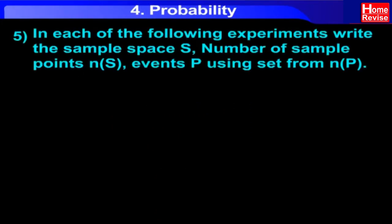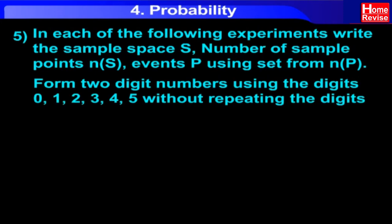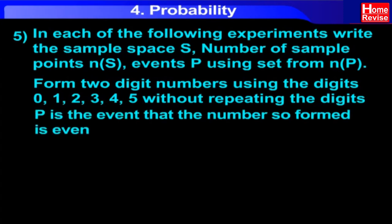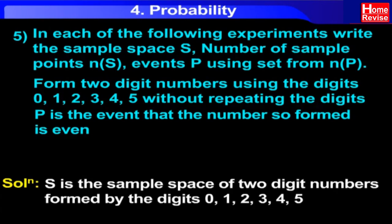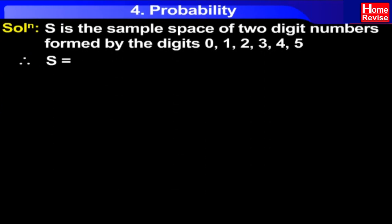Number 5. Form two-digit numbers using the digits 0, 1, 2, 3, 4, and 5 without repeating the digits. P is the event that the number so formed is even. Solution. S is the sample space of two-digit numbers formed by the digits 0, 1, 2, 3, 4, and 5. Therefore S is equal to { 10,